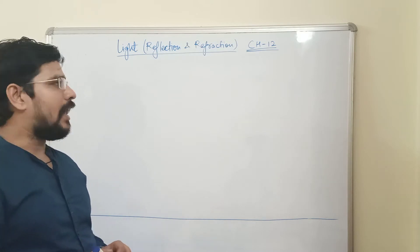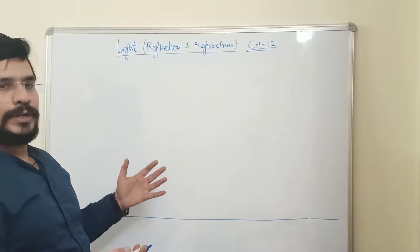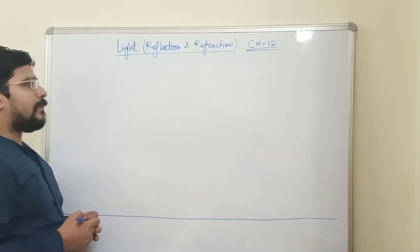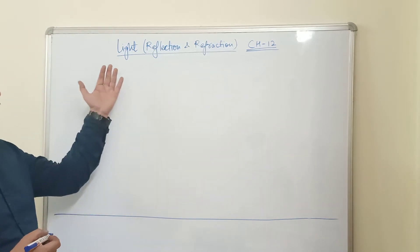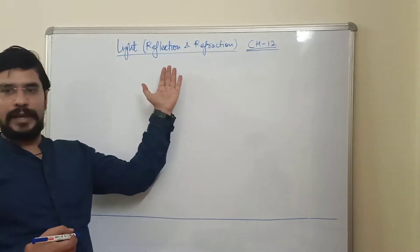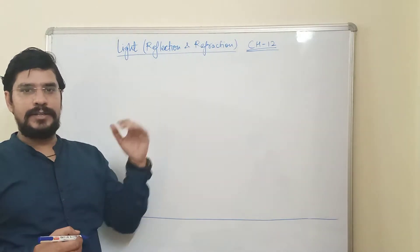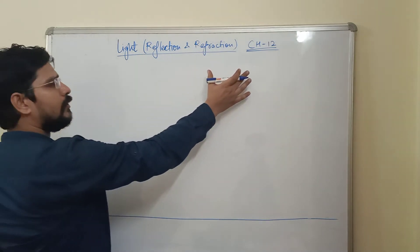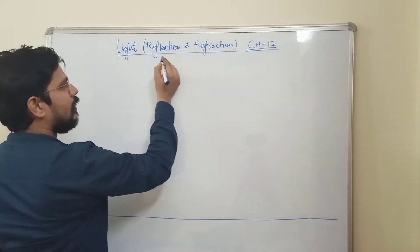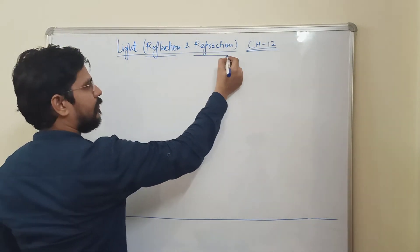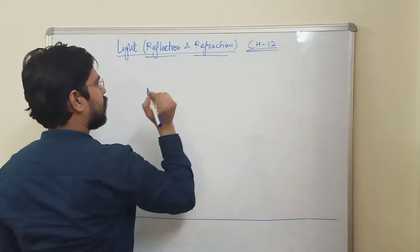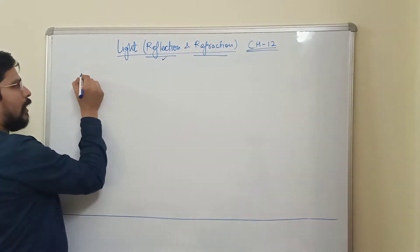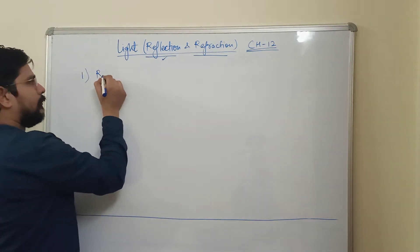For students who have already covered a portion, it will be a revision, and for new students it is a fresh start. The name of chapter 12 is Light: Reflection and Refraction. The chapter is divided into two parts — first is reflection and second is refraction — and we will study about reflection first.